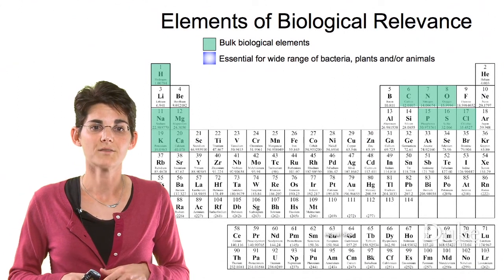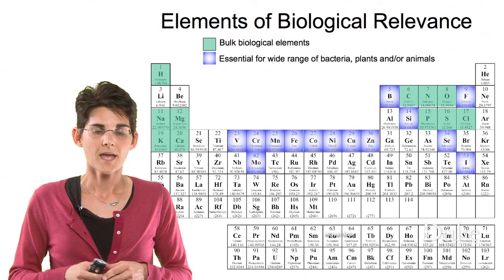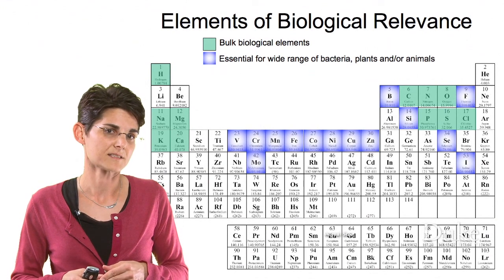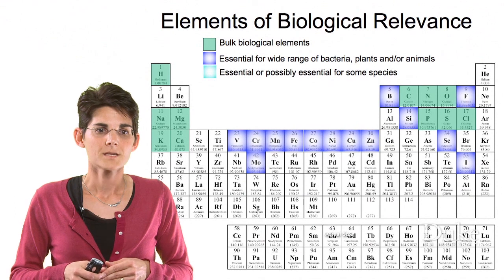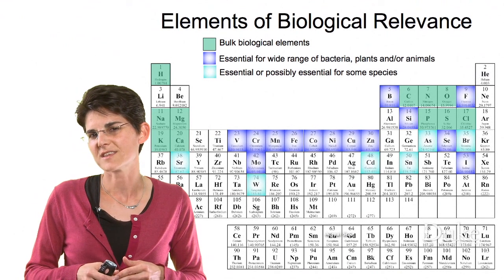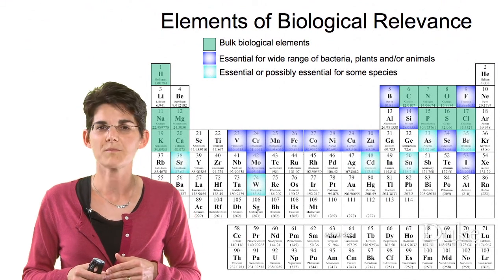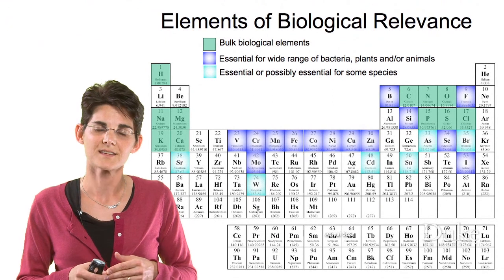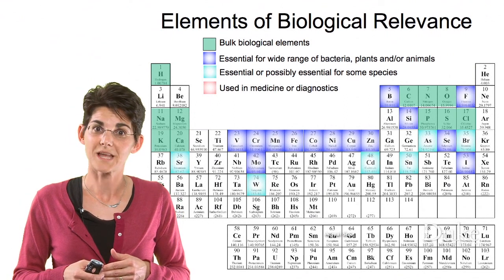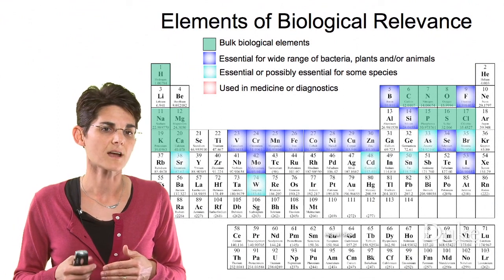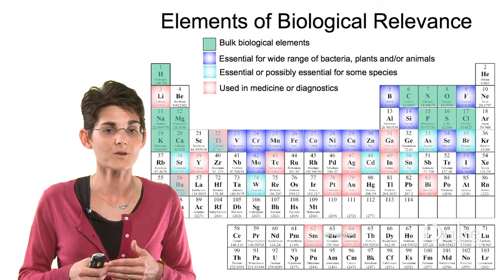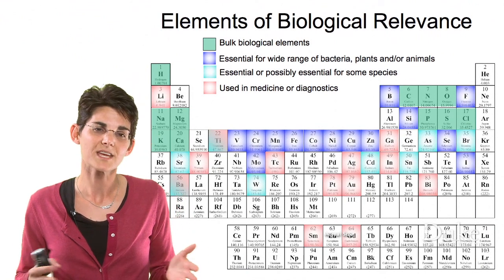Now we'll look at the elements that are essential for a wide range of bacteria, plants, and you and me. You'll see that we go mostly across the whole first row of the transition elements, and a lot of the rest of the p-block gets filled in, but notice not all of the p-block. Then we have elements that are essential or may be essential for some species but not necessarily all — some of these are still somewhat controversial. They might be essential for some strange bacteria that live in ocean vents, but not for all organisms. And then there's another set that inorganic chemists also work with — elements that can be used in medicine or diagnostics but are not necessarily naturally occurring. This is a list that's growing, as chemists can be quite creative with the different kinds of properties these elements offer.